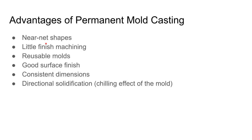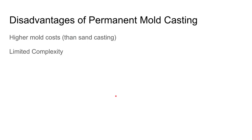Advantages of permanent mold casting include: little finish machining needed, reusable molds, better surface finish than sand casting, and more consistent dimensions since you're not making a new pattern and mold each time. Importantly, the metal mold provides a good chilling effect enabling directional solidification, which gives better grain structure than sand casting, where molds are more insulative.